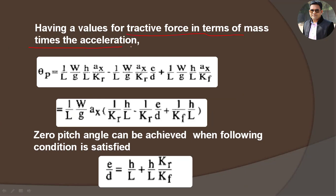Having the tractive force in terms of mass times acceleration, we can replace Fx with (W/G)·Ax, where W/G indicates the overall mass and Ax is the acceleration. The overall term is now transformed into weight and acceleration terms. Taking (1/L)·(W/G)·Ax as a common factor, inside the bracket we have: (1/Kr)·(H/L) minus (1/Kr)·(E/D) plus (1/KF)·(H/L).